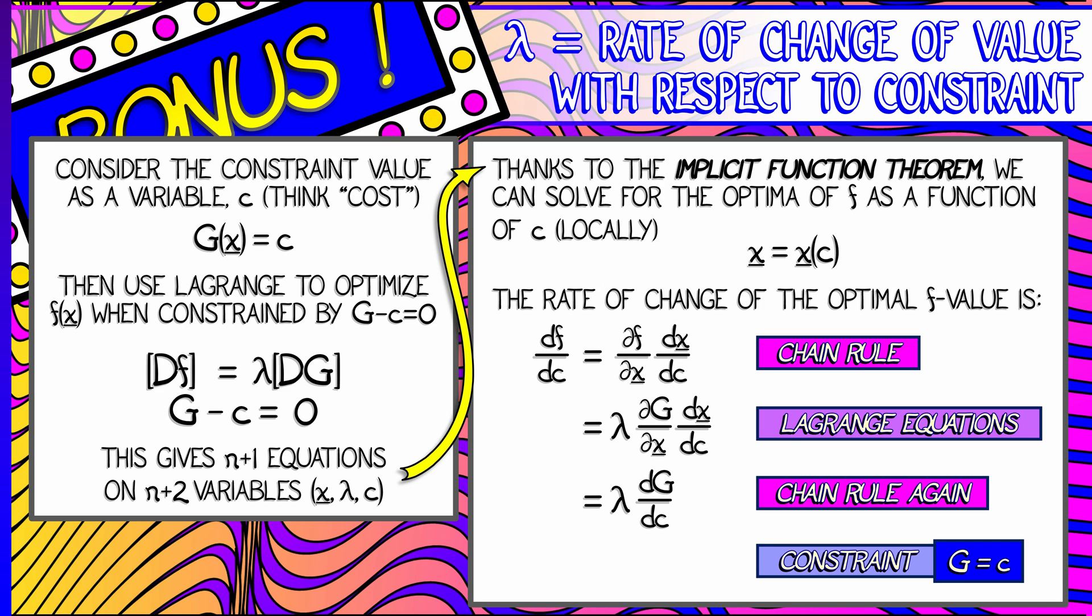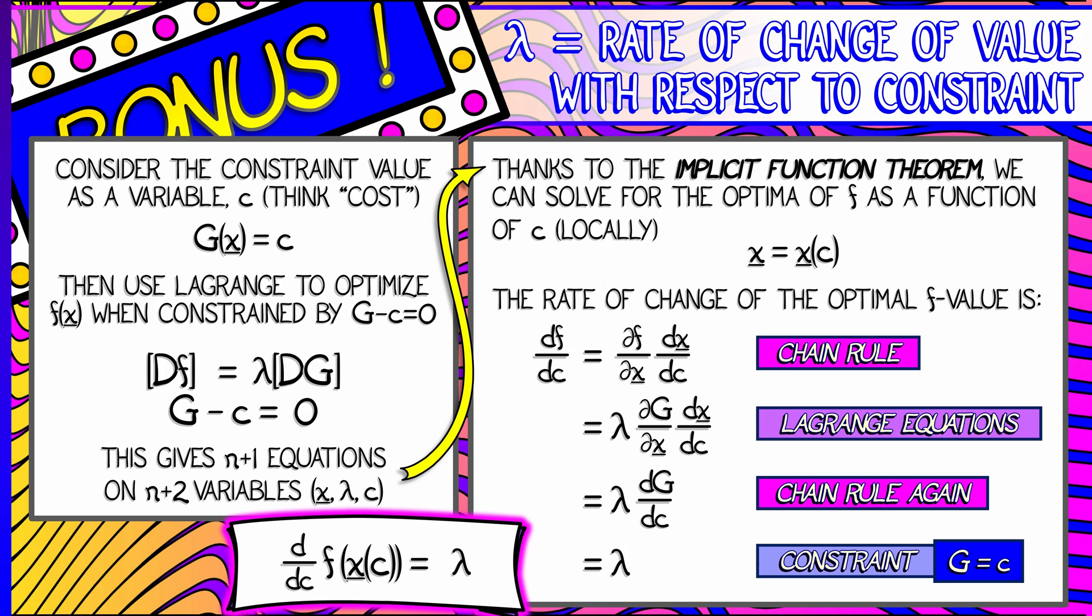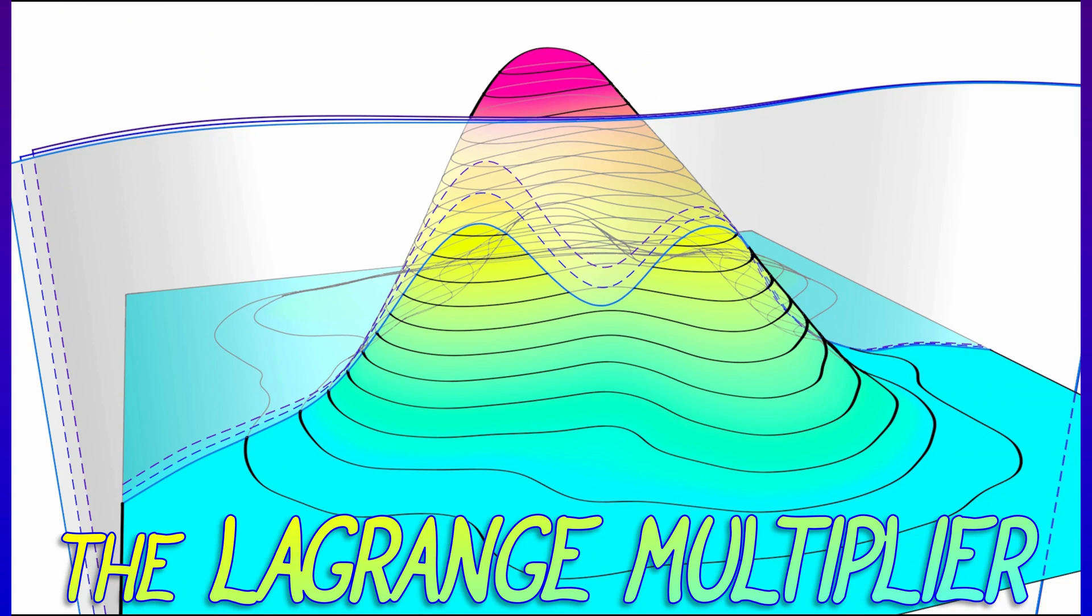So if g is equal to c, and you take the derivative of g with respect to c, what do you get? One. So df/dc is equal to lambda times one. And that's it. We're done. That's what we're trying to show, that the rate of change of f of x of c, the function values at the optima as a function of the constraint value c is equal to lambda. This is what the Lagrange multiplier is.